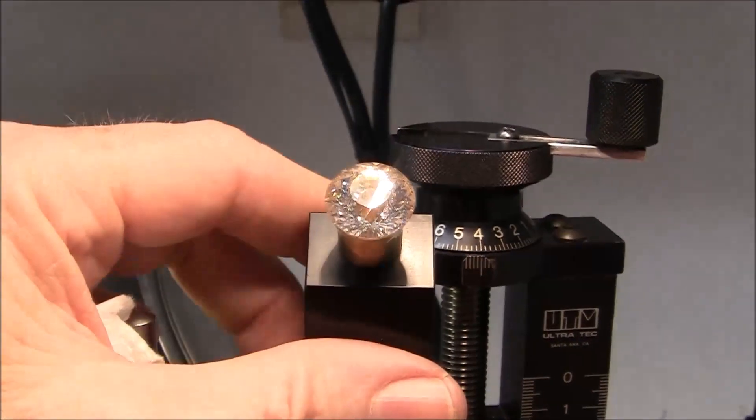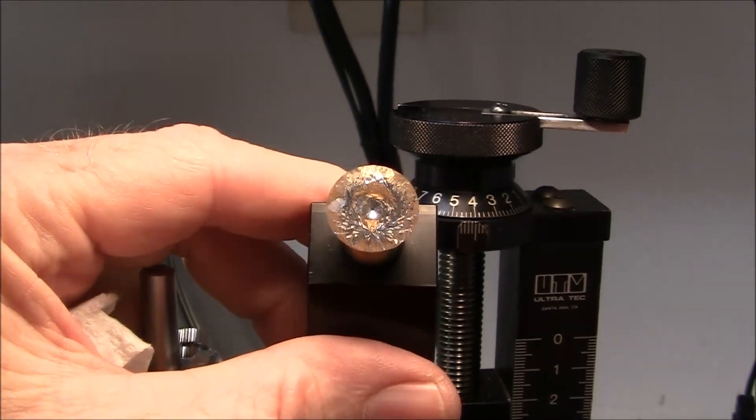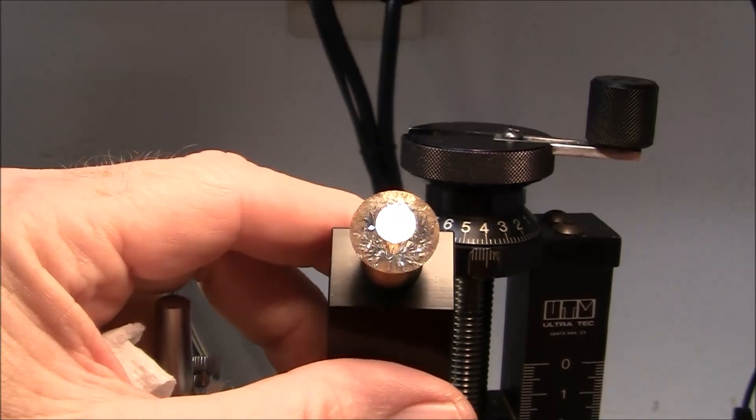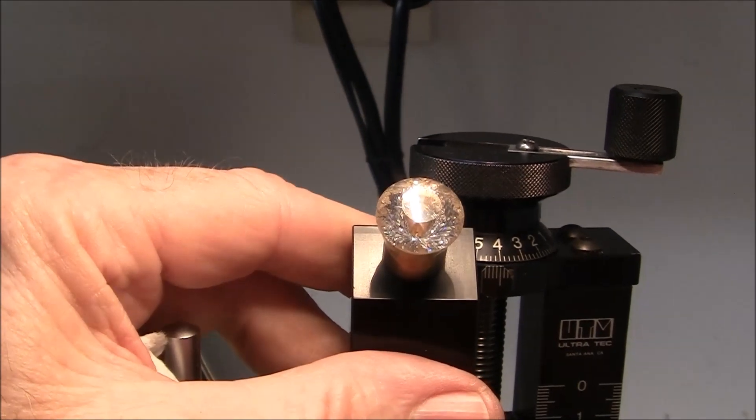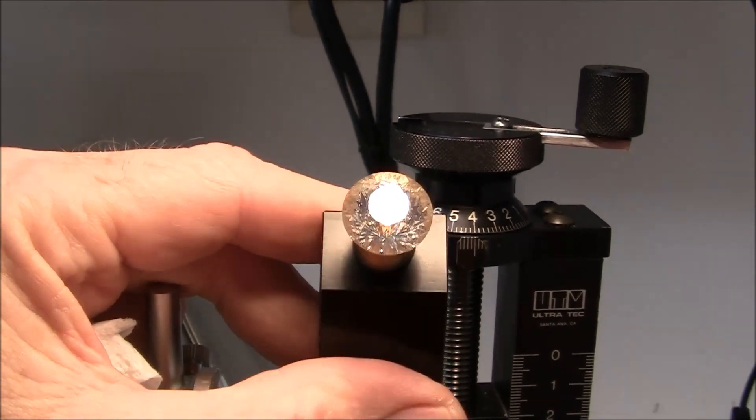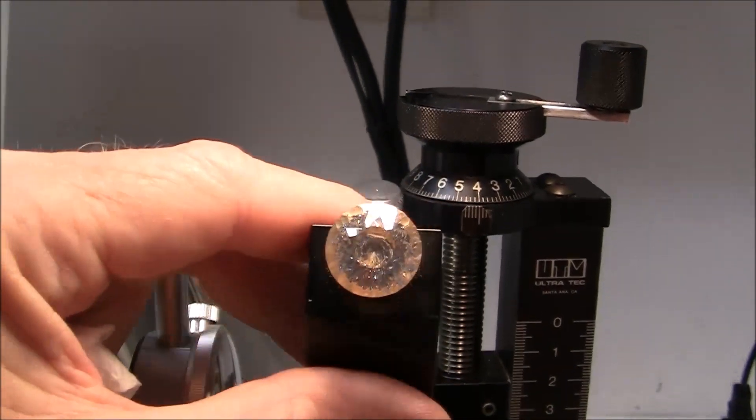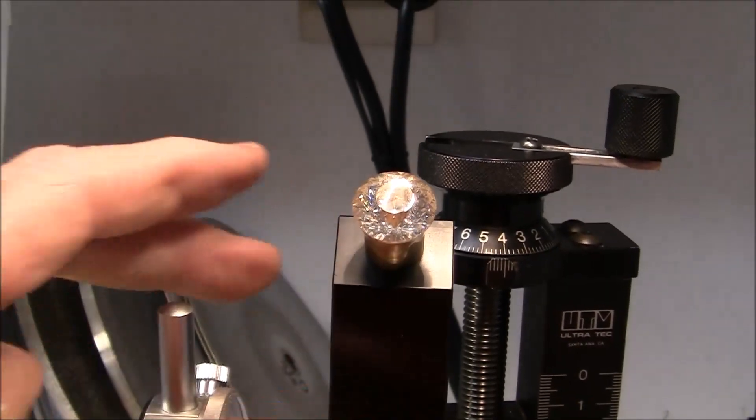So all I've got left to do is do the final polishing on the table. It's been pre-polished to 8,000 grit level. And I'm almost finished with this gemstone.